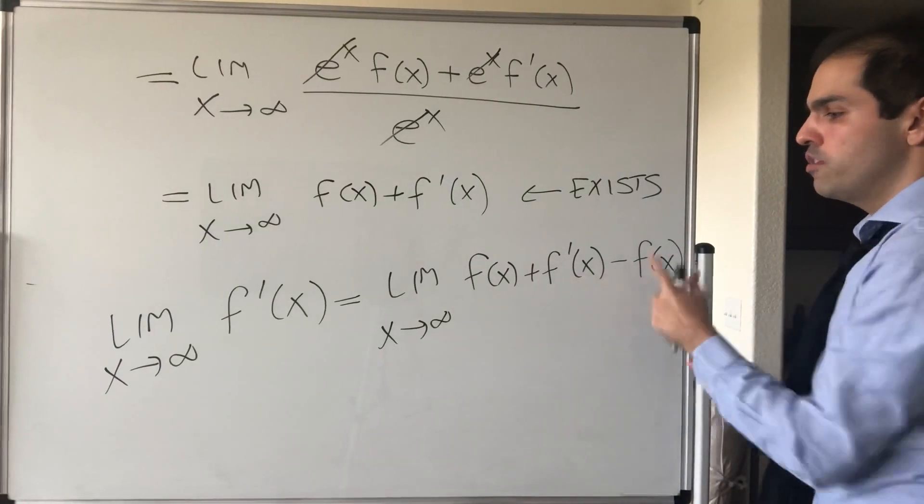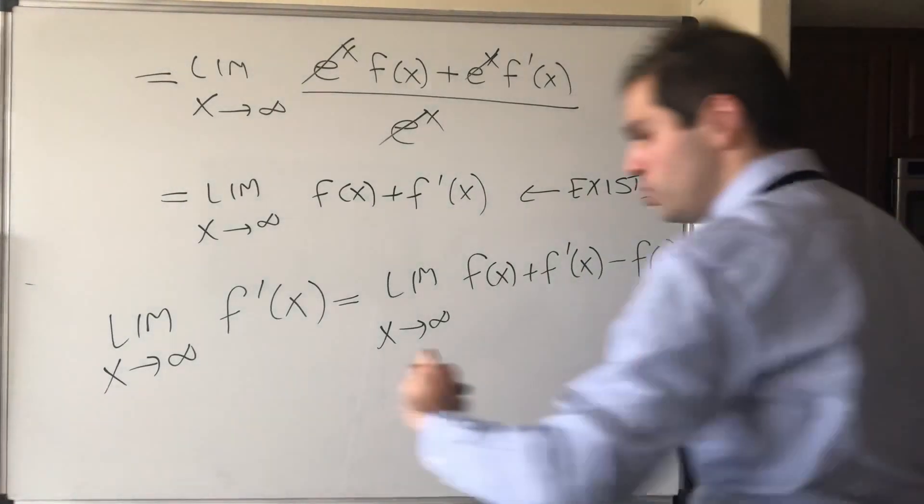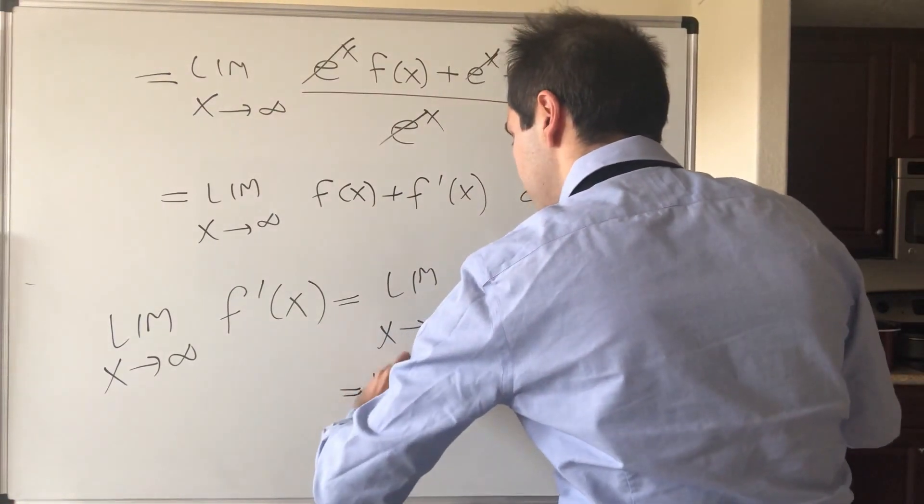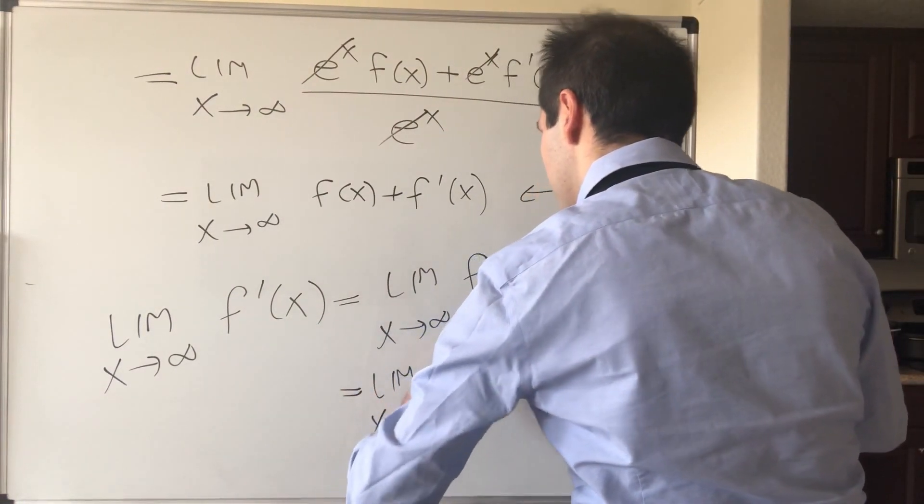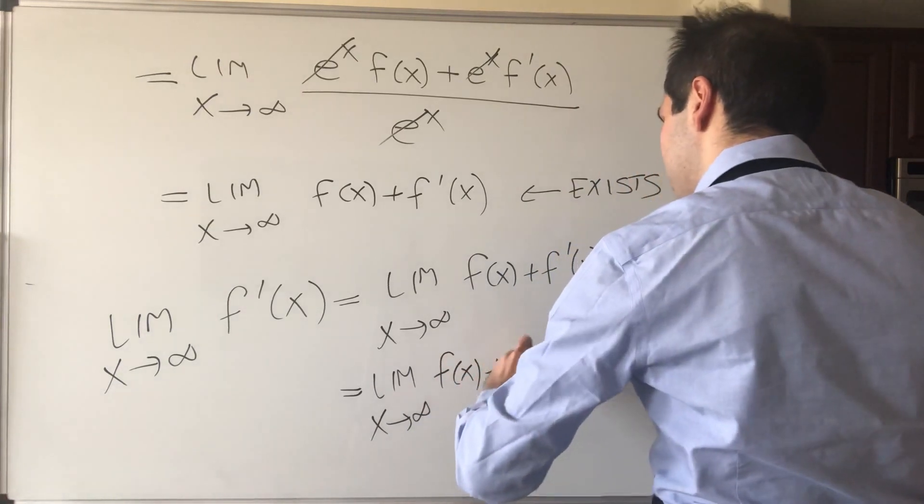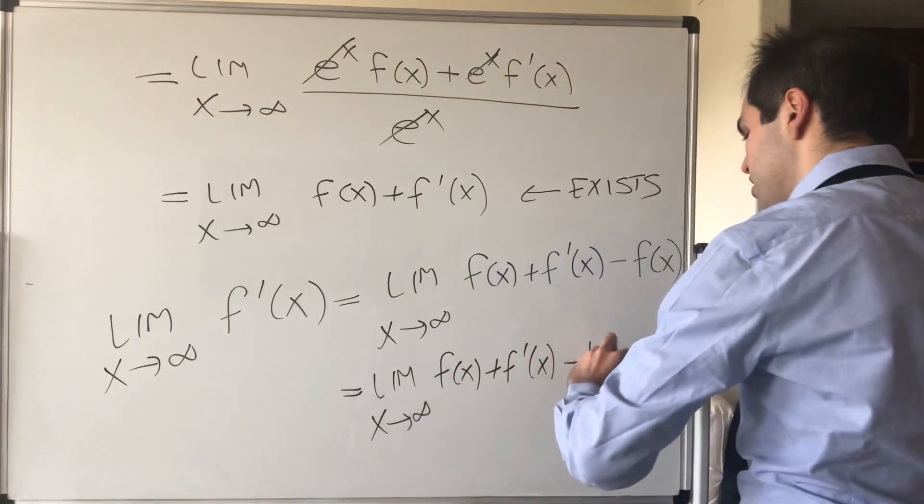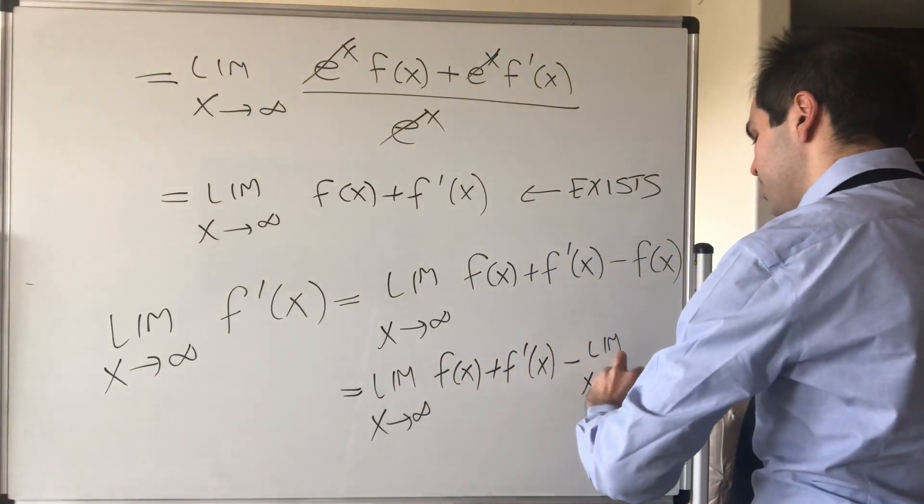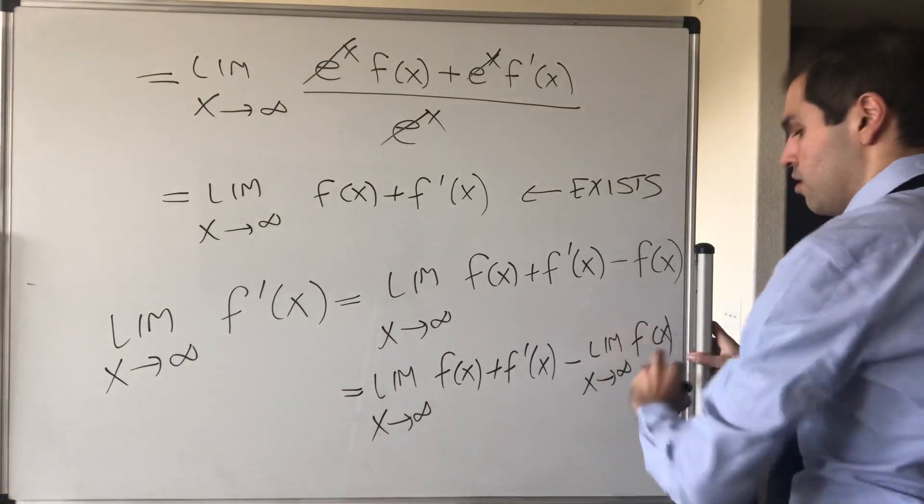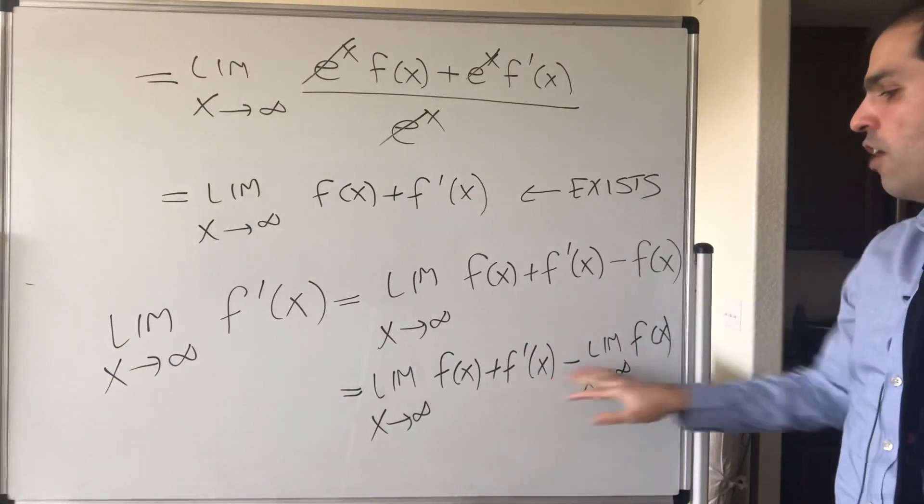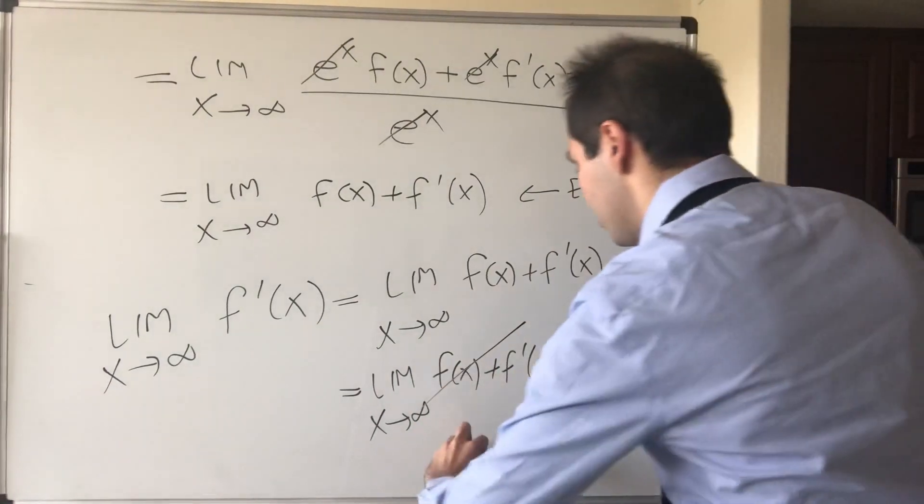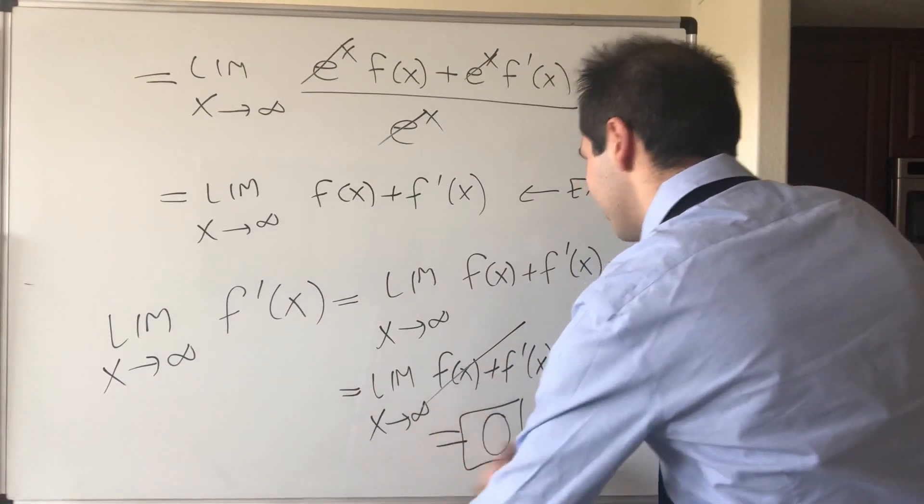Now, that would be an issue if those limits didn't exist, but they do. So this becomes the limit as x goes to infinity of f of x plus f prime of x minus the limit as x goes to infinity of f of x. But we literally found that those two limits are the same, so this cancels out, and in the end, we get zero.